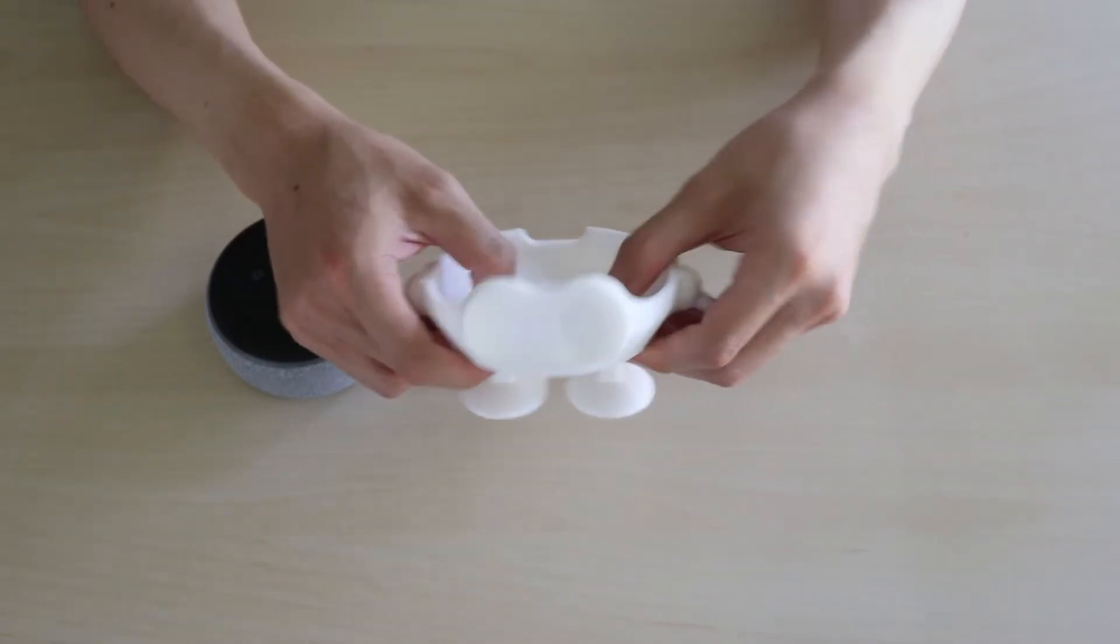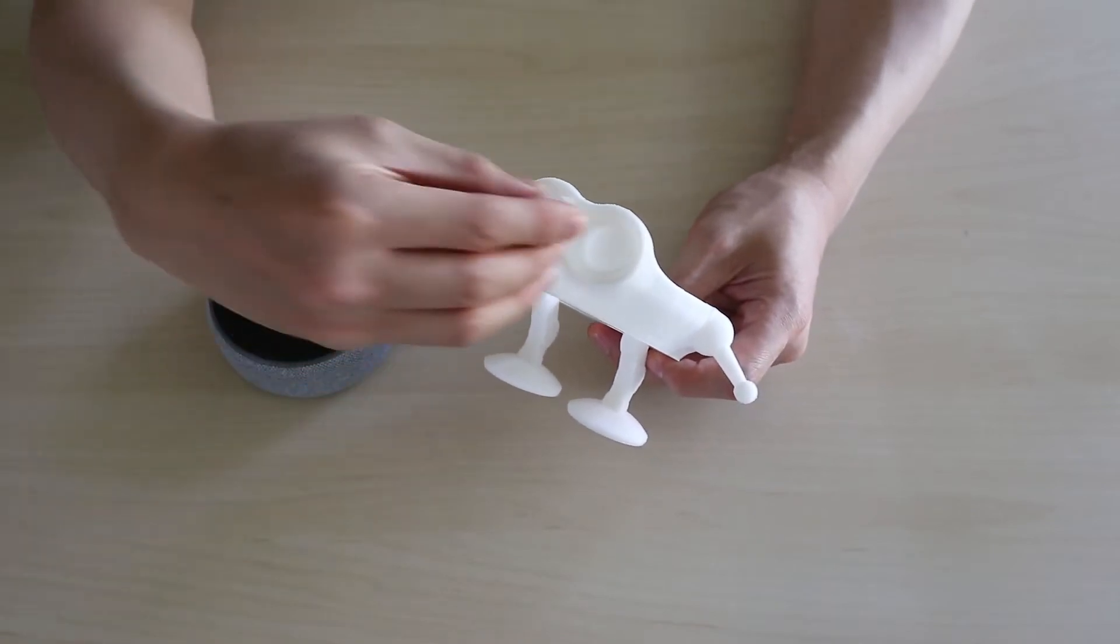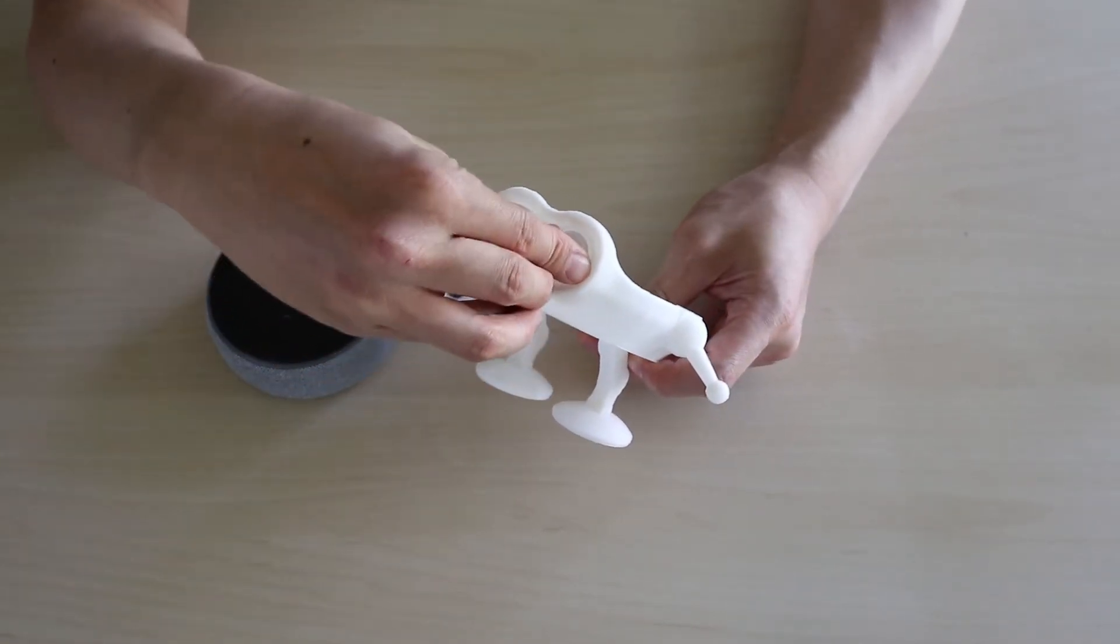Once the 3D printed parts are assembled, we install the non-3D printed part, the googly eyes. This is a very important part of the robot's personality.